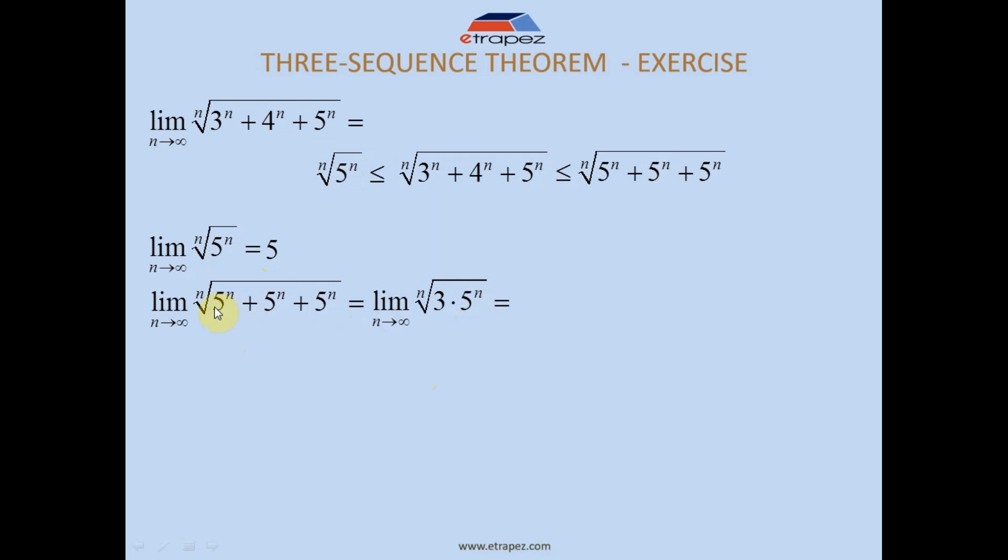If there were four of these added, you would write four times that something. So we have something like this. This step is clear. Now, the nth root of something times something is the nth root of the first thing times the nth root of the second thing.